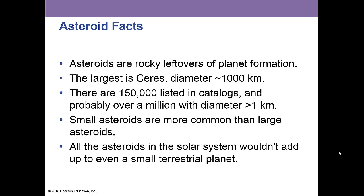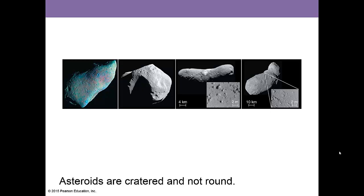Here are some asteroid facts. Asteroids are rocky leftovers of planet formation. The largest asteroid is Ceres, about 1,000 kilometers or 600 miles across. There are 150,000 listed asteroids in catalogs, and probably over a million with a 1 kilometer diameter or more. Smaller asteroids are more common than large ones, and all the asteroids in the solar system would not add up to even a small terrestrial planet. Asteroids are cratered and not round because they do not have enough gravity to be round.